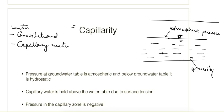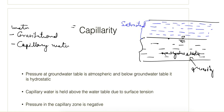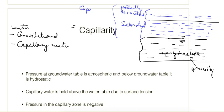Below the water table, at any point the pressure will be hydrostatic. But if gravity were the only force acting, the soil above the water table would remain dry. However, that is not the case — water rises up to some distance above the water table due to the capillary phenomenon, so the soil will again be saturated up to a certain distance above the water table, and partially saturated for some additional distance beyond that.